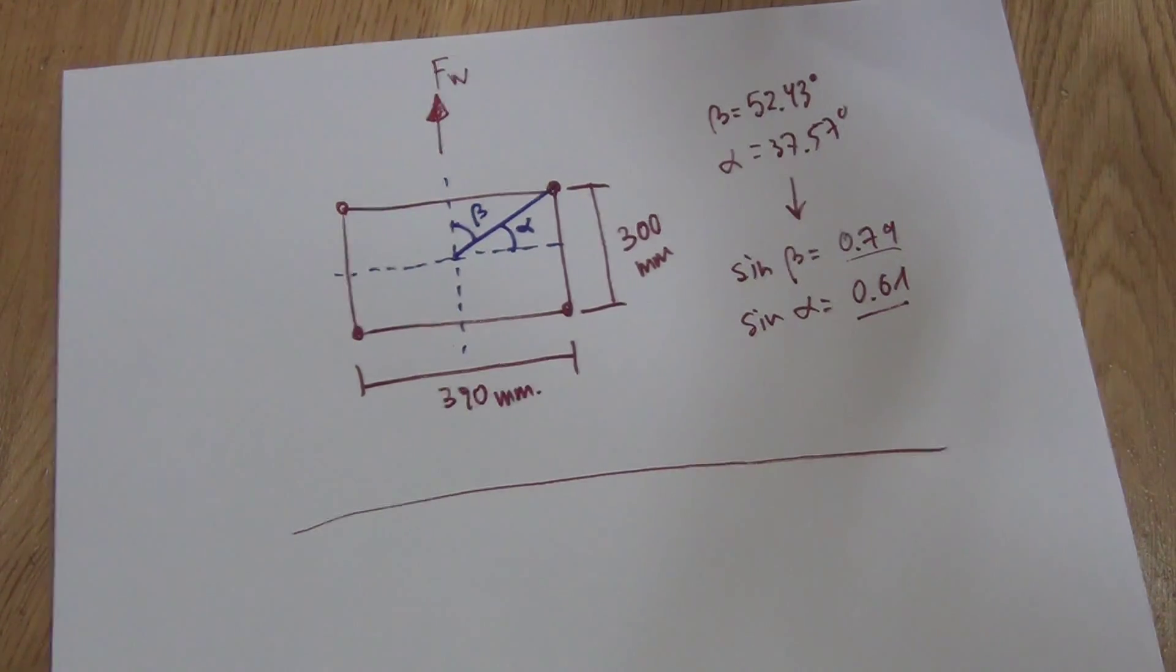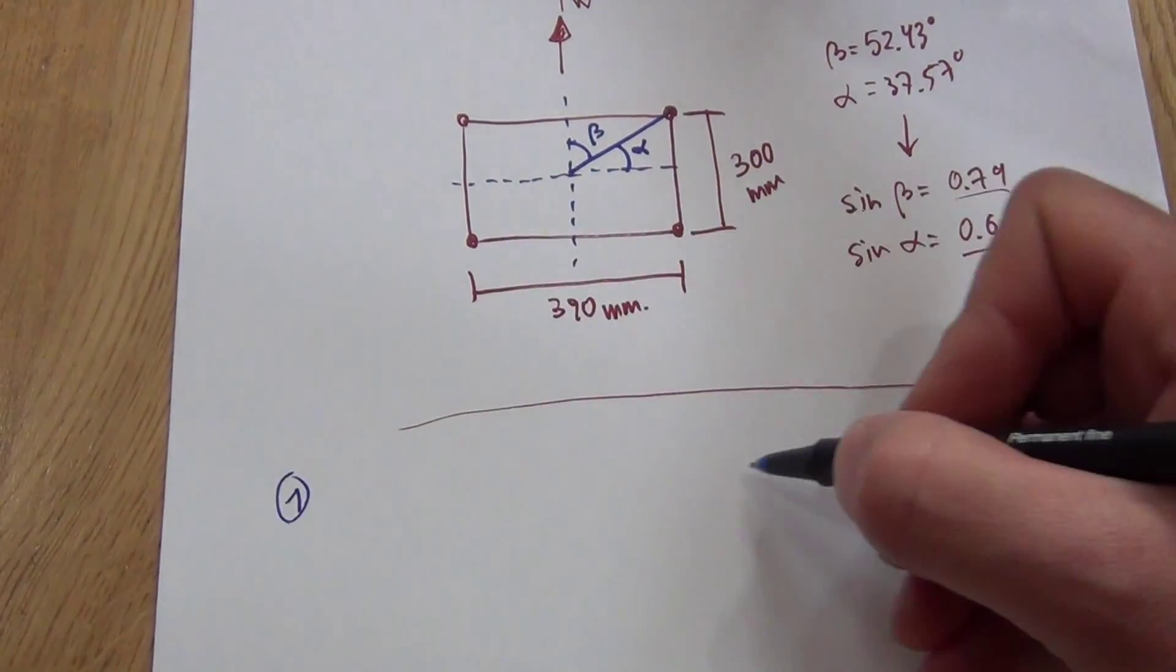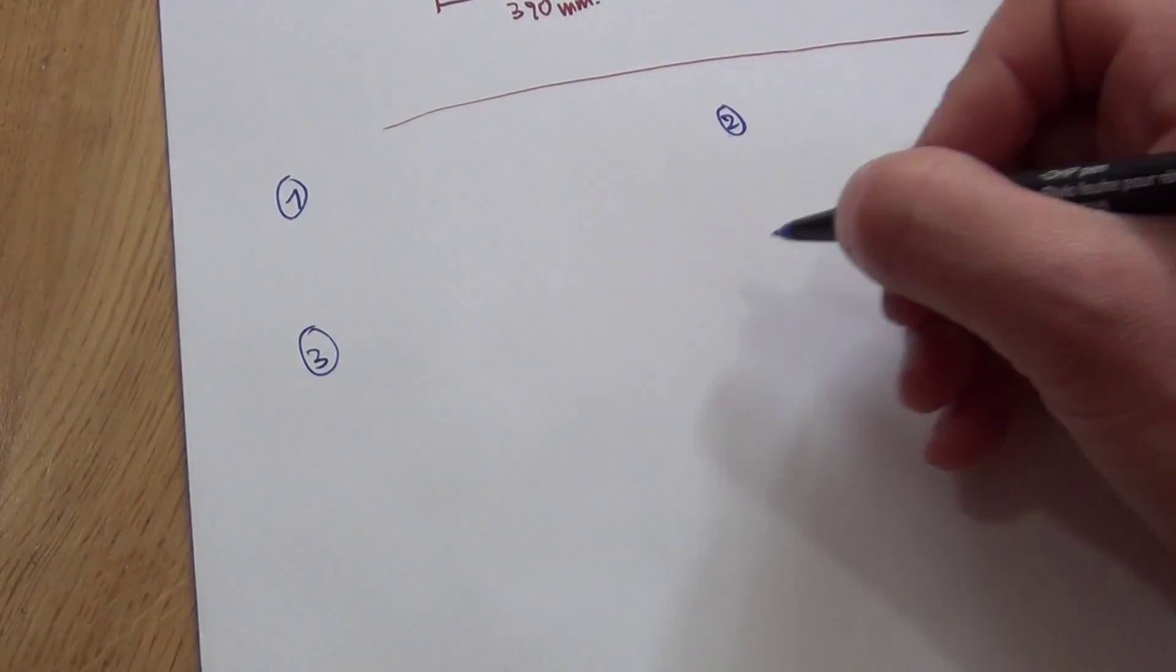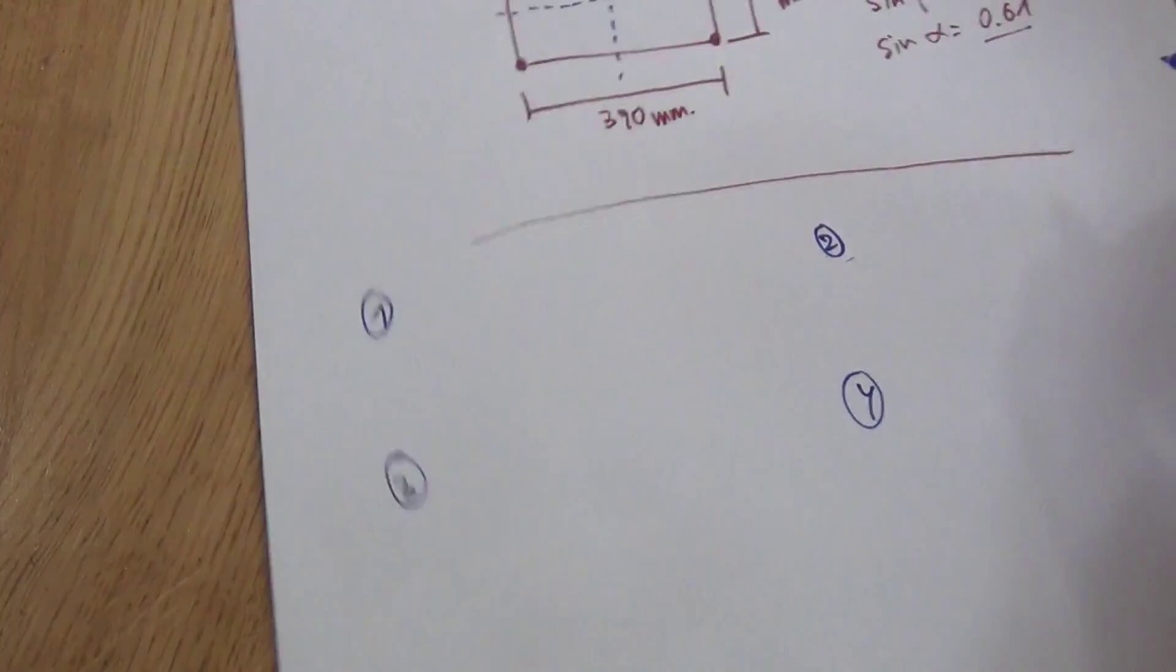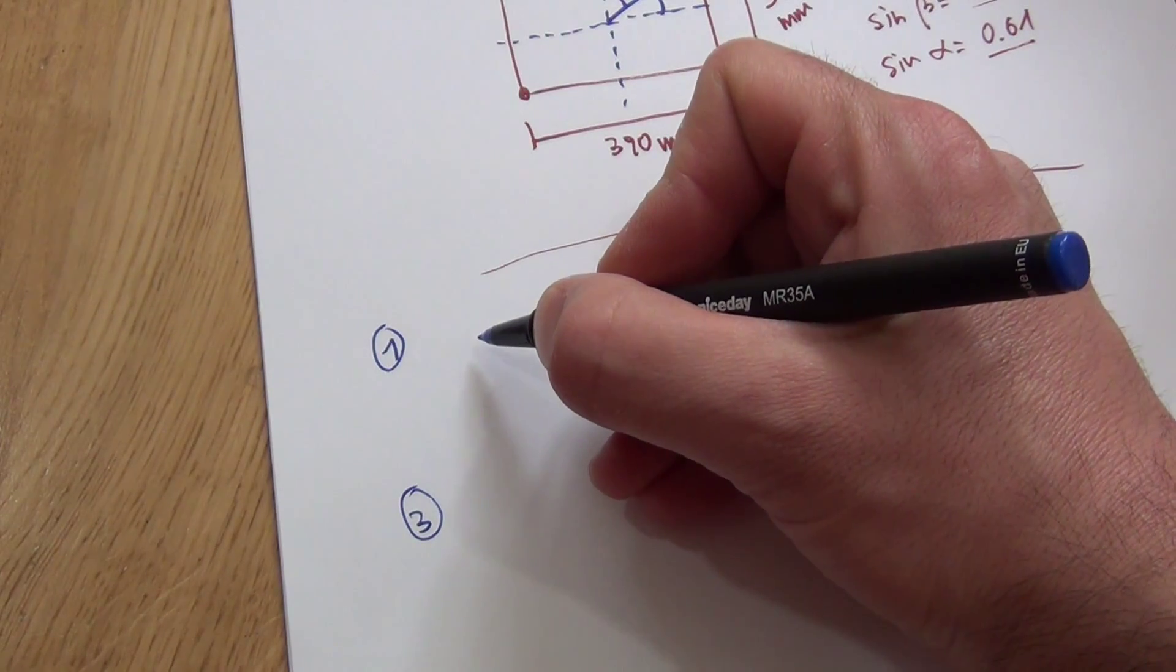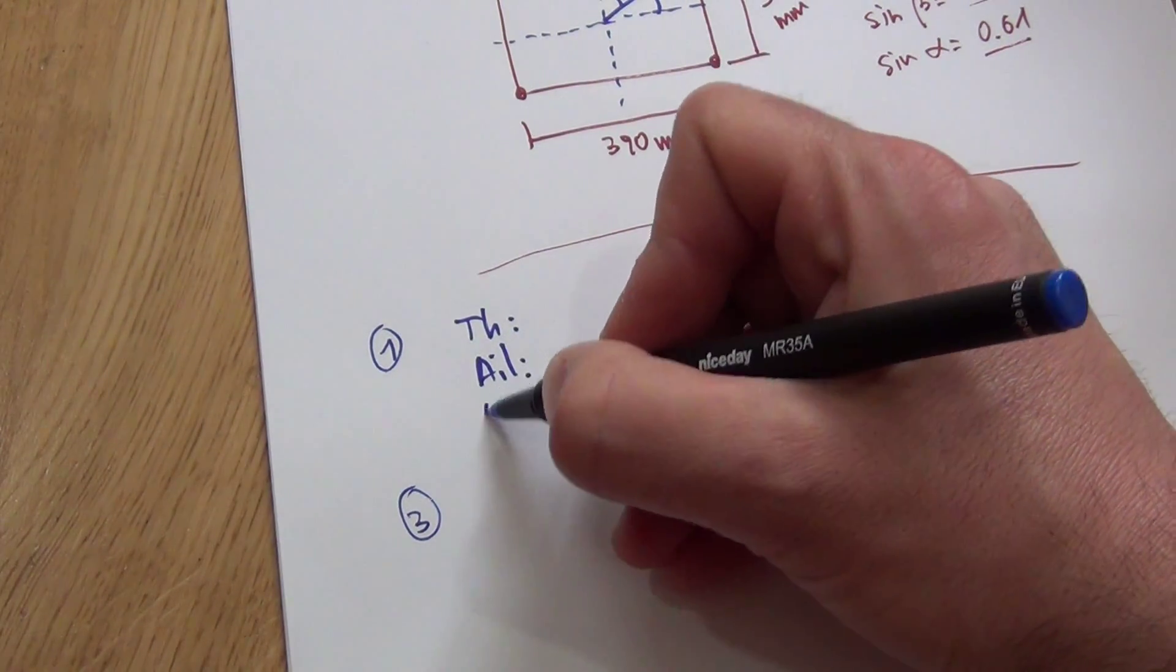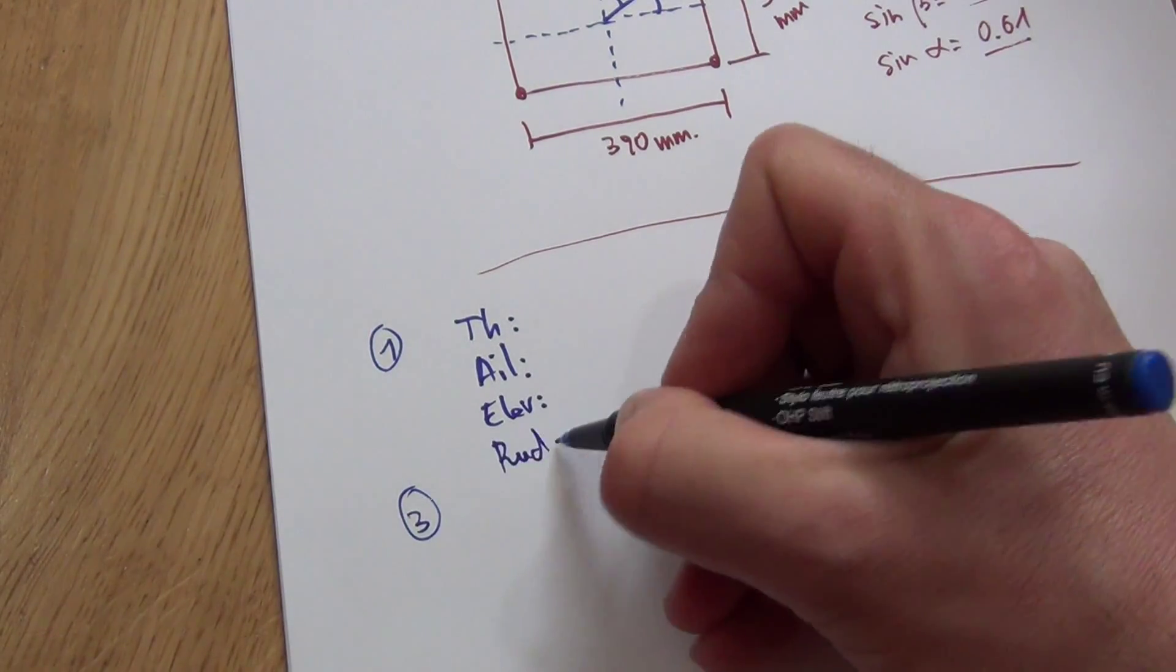Now if you check the mixer editor, you will find out that for every channel, one, two, three, and four, in my case the four motors, motor one, two, three, and four, you have four values that you can put, which are in this order: throttle, aileron, elevator, and rudder.